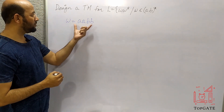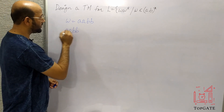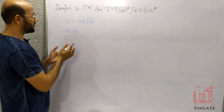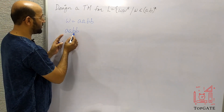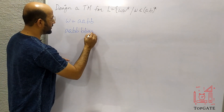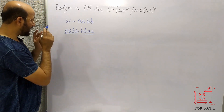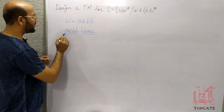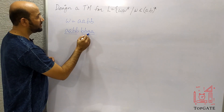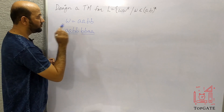If we have A, A, B, B in W, then the full string will be A, A, B, B followed by the exact reverse — W^R will be B, B, A, A. So this is your W and this is your W^R. Analyzing this, we can see the first character is the same as the last, the second is the same as the second last, the third is the same as the third last, and the fourth is the same as the fourth last.